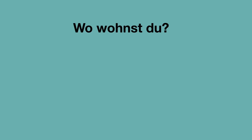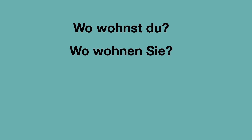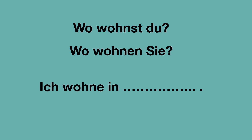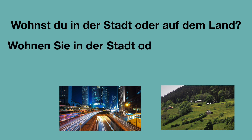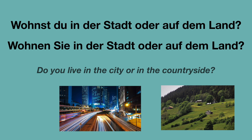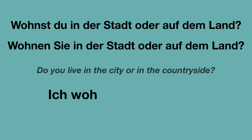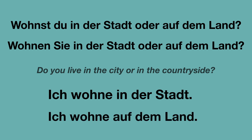Wo wohnst du? Oder in der Sie-Form: Wo wohnen Sie? Die Antwort: Ich wohne in — zum Beispiel: Ich wohne in Hamburg. Wohnst du in der Stadt oder auf dem Land? In der Sie-Form: Wohnen Sie in der Stadt oder auf dem Land? Both of them mean: Do you live in the city or in the countryside? Die Antwort, zum Beispiel: Ich wohne in der Stadt.